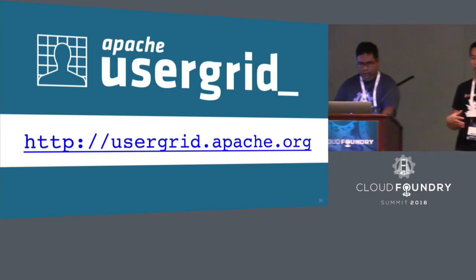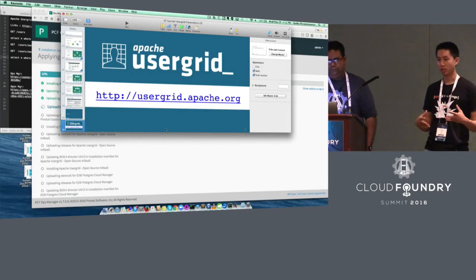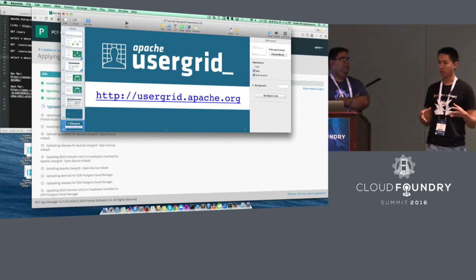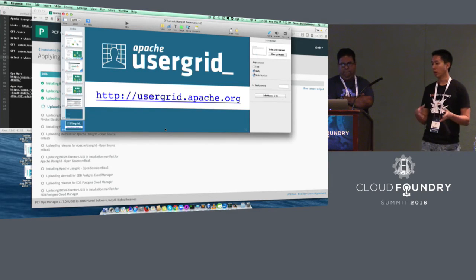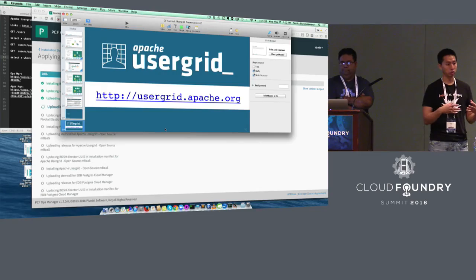The key takeaway is: if you're building microservices and really need a micro data service, and you don't want to be managing hundreds or thousands of NoSQL databases, check out UserGrid. It allows you to have one large NoSQL cluster, but lets your app developers provision data services themselves without the pain of provisioning or managing NoSQL databases. You can go to GitHub, clone it, and try out the tile on Pivotal Cloud Foundry Marketplace.